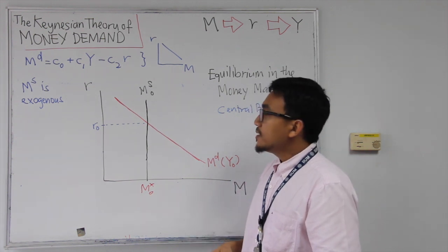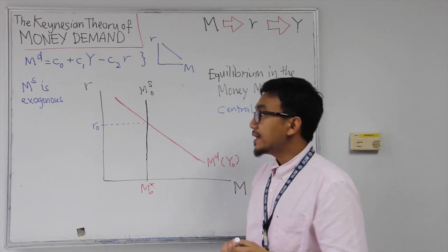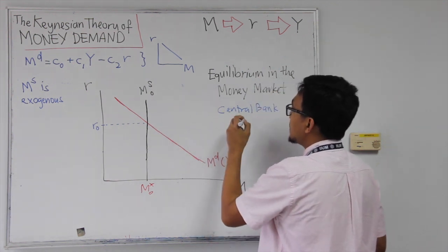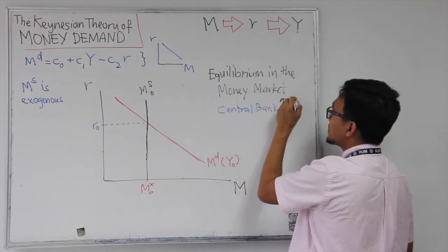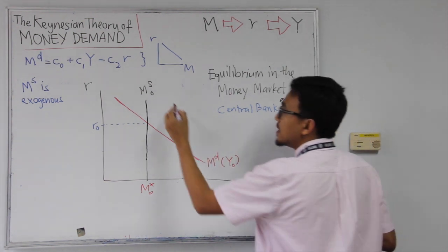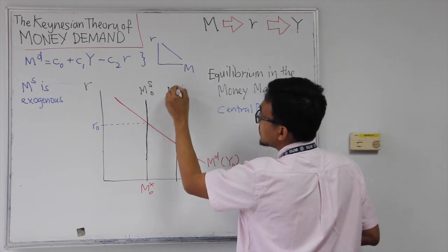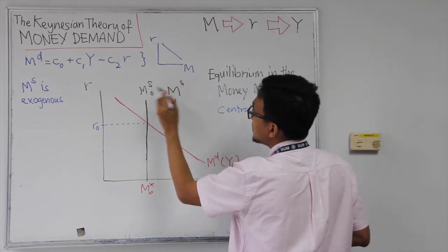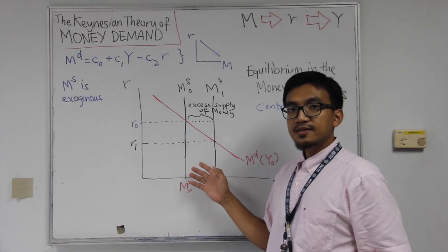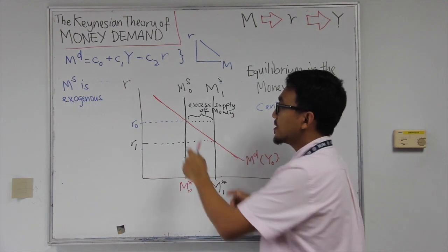So now let's see what happens if the central bank then decided to increase money supply. So let's say central bank decided to increase money supply. So now when central bank increase money supply, the supply curve, the money supply curve will then shift to the right. So from MS0 to MS1. When central bank increase money supply, the money supply curve will then shift to the right.